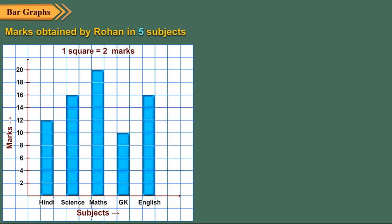For this bar graph, we get the following information. Since the bar corresponding to maths is tallest, it means Rohan obtained maximum marks in maths.